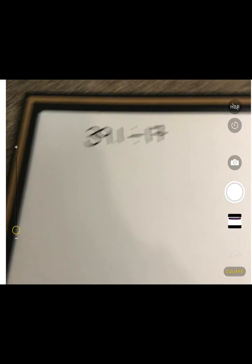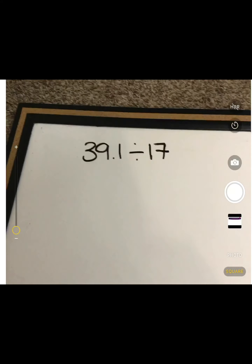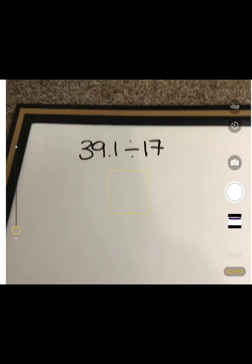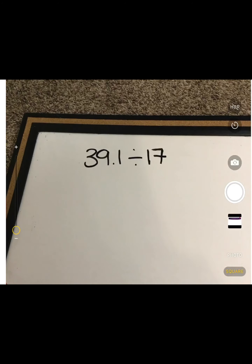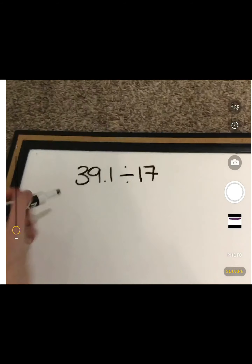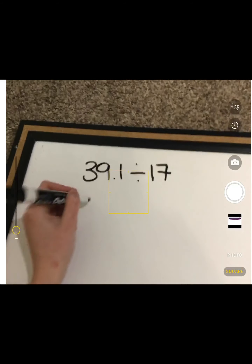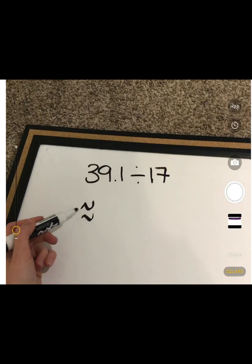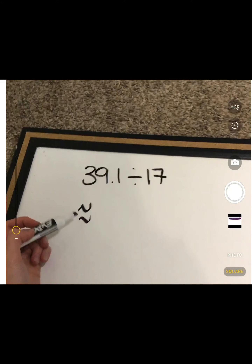Now we're going to look at estimating using these numbers. Go ahead and write 39 and 1 tenths divided by 17 on your whiteboards, and then I'm going to switch my screen so you can follow along. This symbol right here means approximate, which means you are going to be estimating.